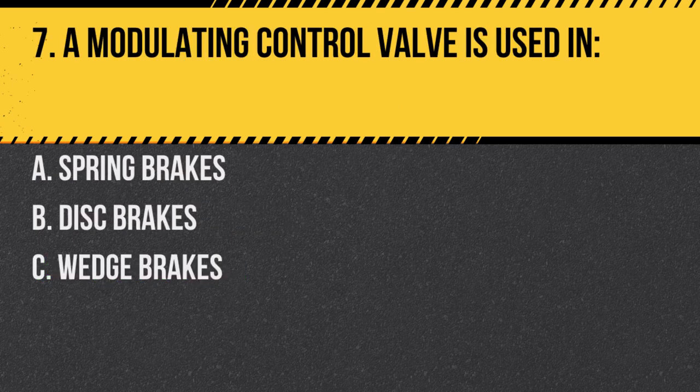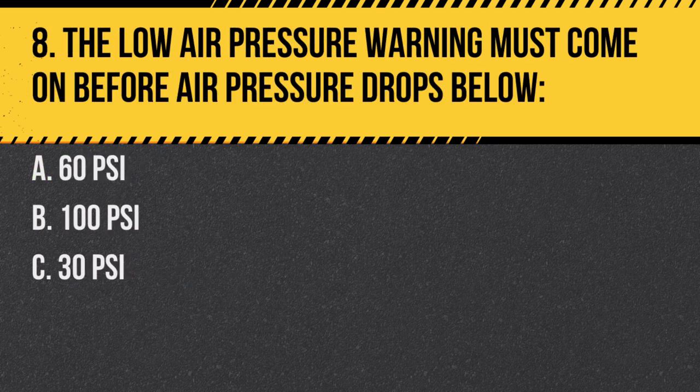Question 7. A modulating control valve is used in: A. Spring brakes. B. Disc brakes. C. Wedge brakes. Answer A. Spring brakes. The modulating control valve provides gradual air pressure to spring brakes.